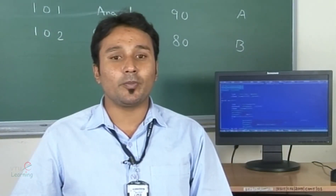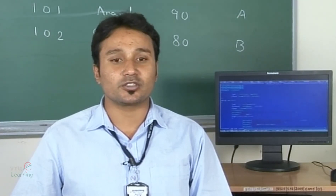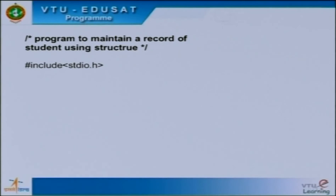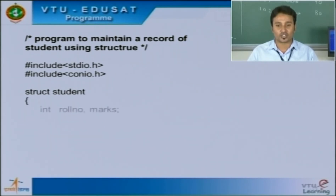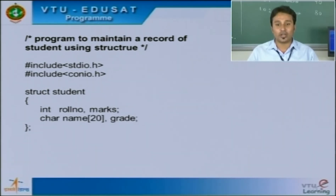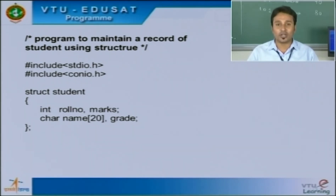Now let us look into the program. The first line is #include stdio.h, the preprocessor directive with the standard input/output header file. The next line is #include conio.h, the console input/output header file. After that, struct student declares the structure — struct keyword followed by the structure name — with fields: roll number and marks as integer data type, and name and grade as character data type. The structure is then terminated.